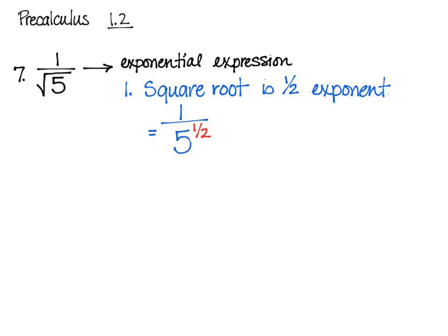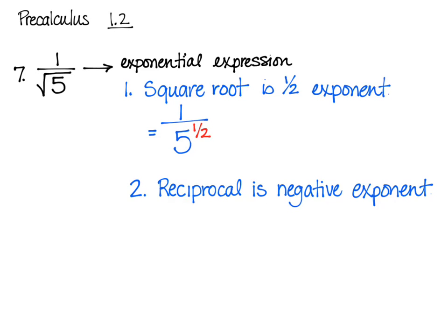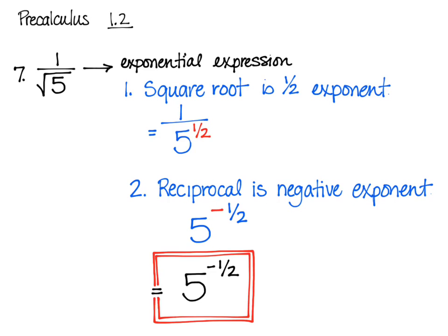That 5 to the 1/2 power is still in the denominator, so we're going to use the reciprocal property, where we can take the reciprocal and have a negative exponent. So we have 5 to the negative 1/2 power, and that's the final answer.